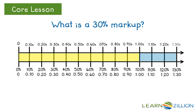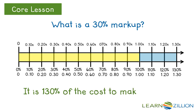Their total cost will be 130 percent of X. They would write it as 1.30X. They could find the amount to charge for each t-shirt after the markup by multiplying the cost of each shirt times 1.30. It is 130 percent of the cost to make a shirt.